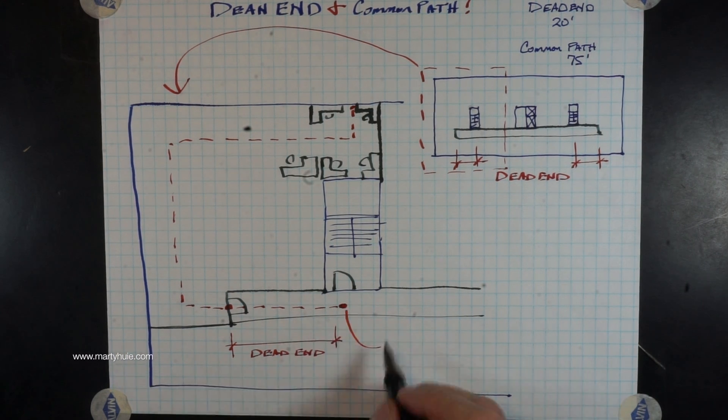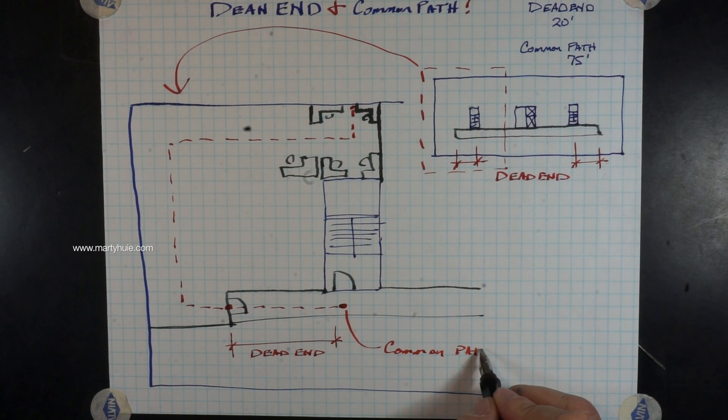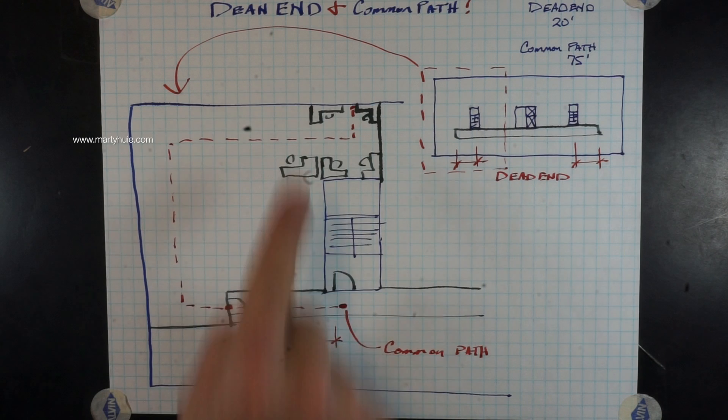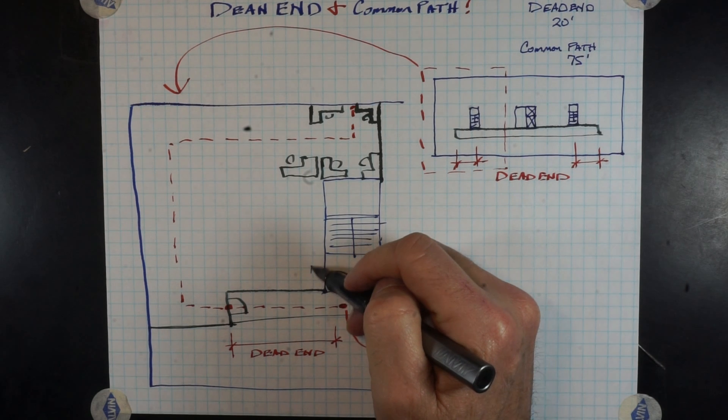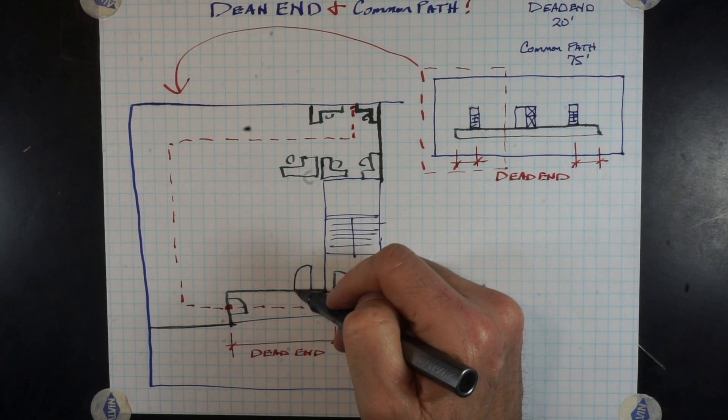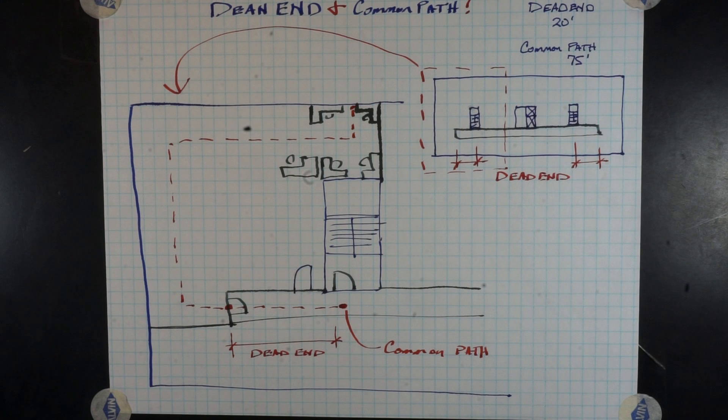The total distance is all the way to the stair door, where at this point we have a decision whether or not we go into this stair or go into the next stair. Therefore, that is our common path of travel or our location of our decision point.